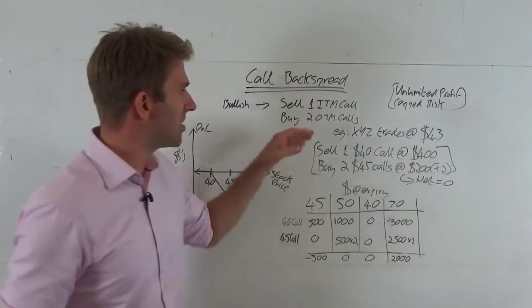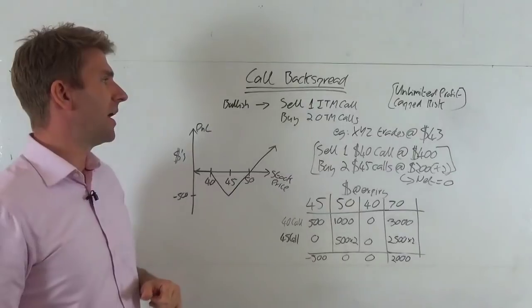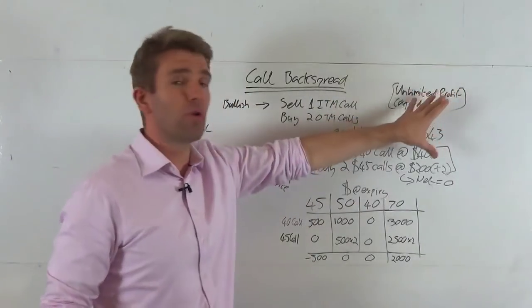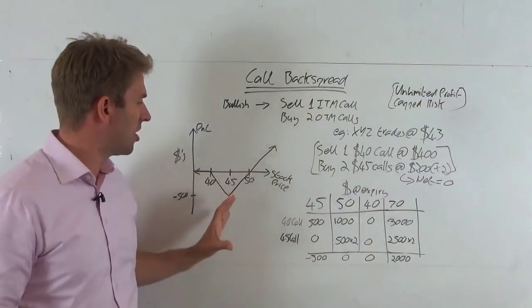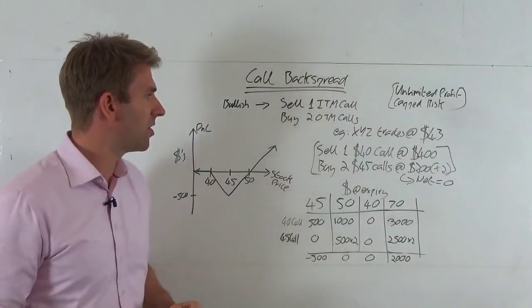To produce this, we'd sell one in the money call. We'd buy two out the money calls. Like I say, we've got unlimited profit on this, but we've got capped risk. It's a bit of an odd chart, but you can see in a minute why this works and the example that we put on the board now for you guys.